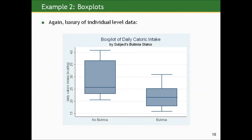Here's a box plot of the daily caloric intake by the subject's bulimia status. Compare this to what we saw in the CE cost box plots. Here, even though the sample sizes are small and there's a lot of uncertainty, this is somewhat visually striking. We can see that those without bulimia have their daily caloric intake shifted higher relative to those with bulimia — not just the center, but the whole distribution. But of course there's not a lot of data fueling this, so we want to account for the uncertainty.